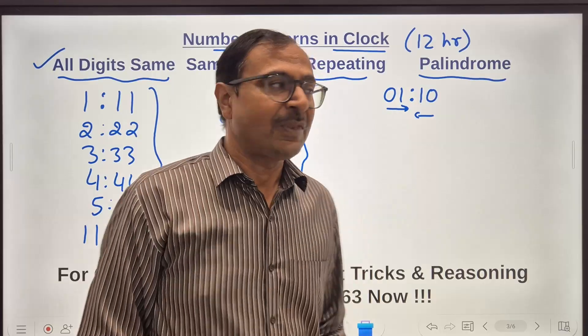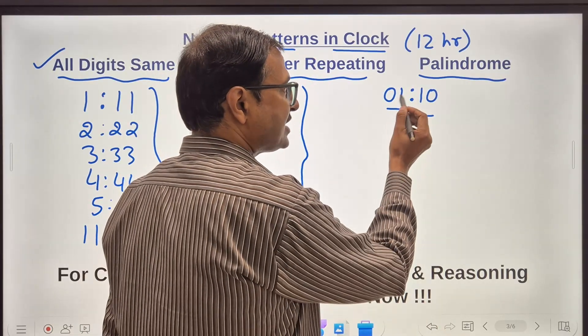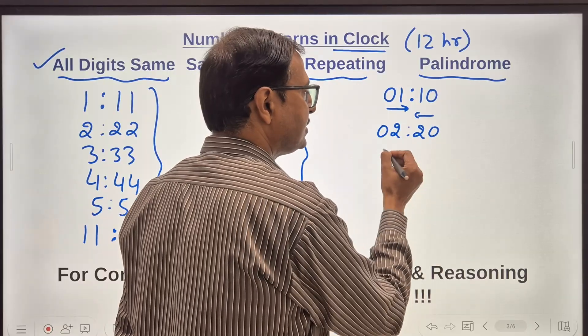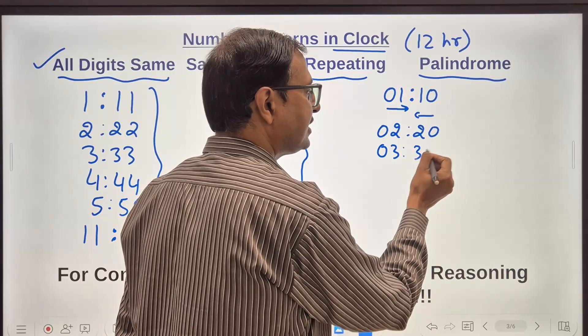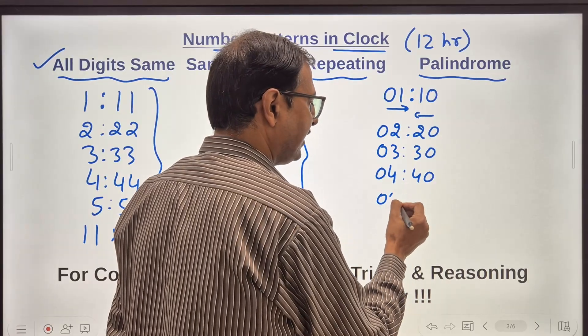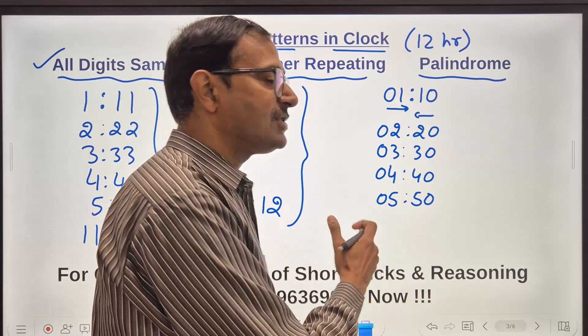So how many such times are there? You can replace 1 by 2. So 02:20, 03:30, 04:40, 05:50. Now I can't write 06:60 because 60 minutes you don't write.